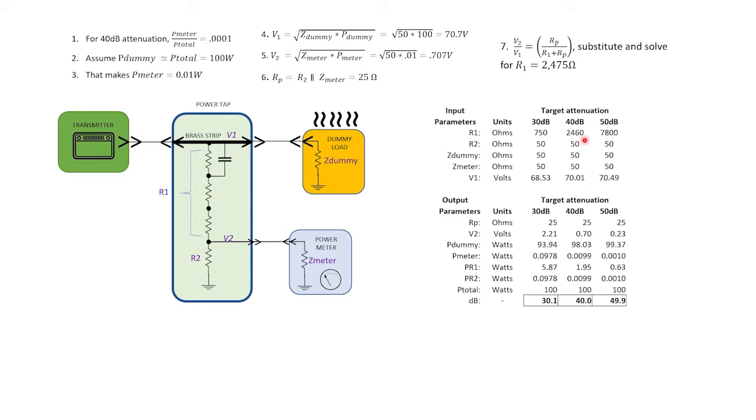So for 30 dB of attenuation, you can use 750 ohms for R1, which you can get from two 240 ohm resistors and one 270 ohm resistor. For 50 dB of attenuation, it's 7.8K, which can be done with two 2.7K resistors and one 2.4K resistor.